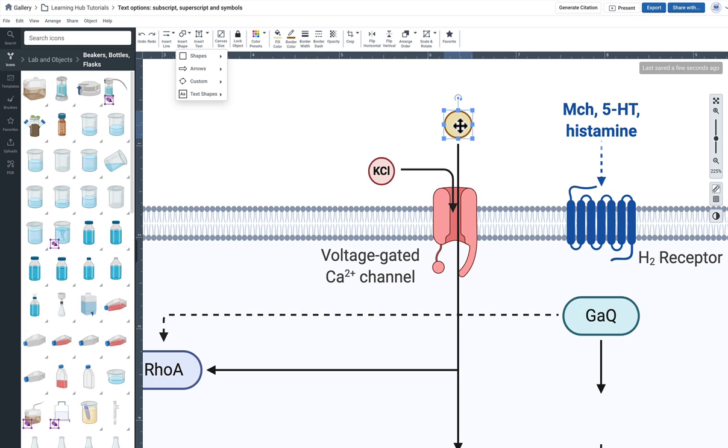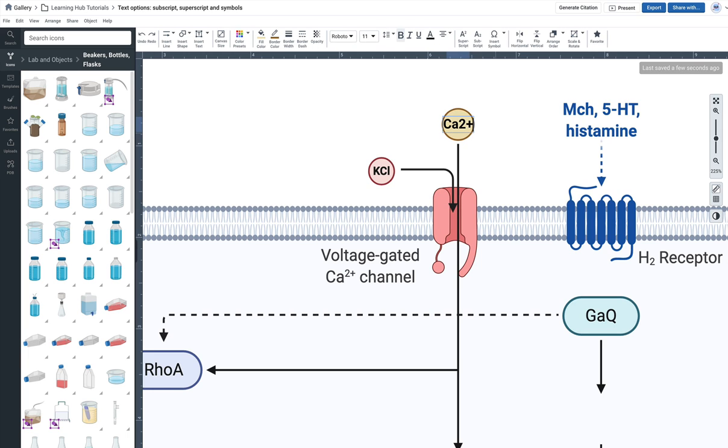But I'm going to double click this circle and simply type in Ca2+ and for that I'm going to again use the superscript option.